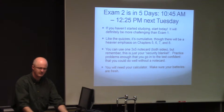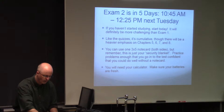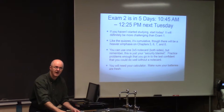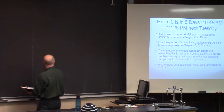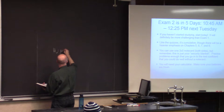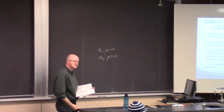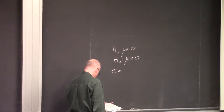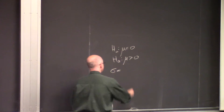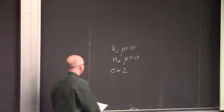Let's start by doing that example that was on the homework — like the problem we did last time, where you're trying to figure out the sample size necessary to get a certain power. In this case the power was 0.9 instead of 0.8. Problem 6.103. You're testing a null hypothesis that mu equals zero versus an alternative that mu is greater than zero. You're told the population standard deviation sigma is 2. Alpha is 0.05.